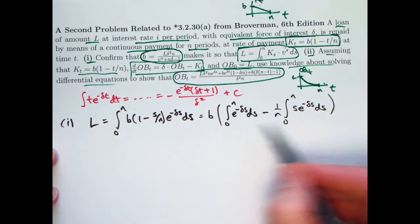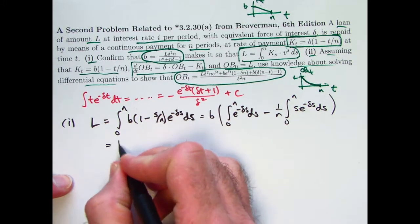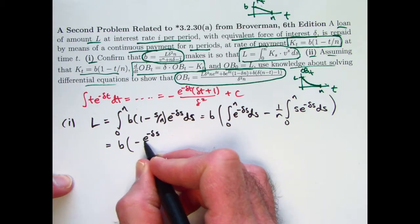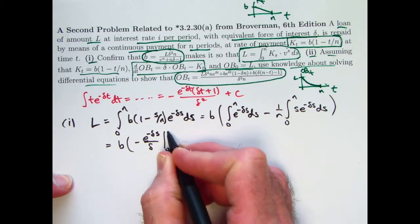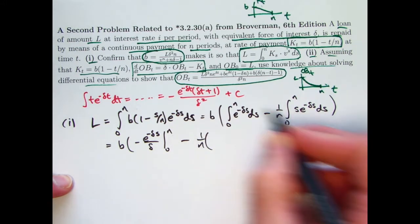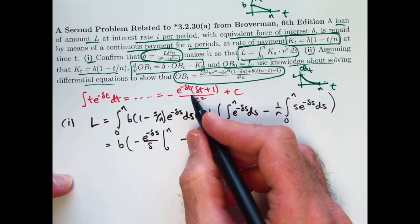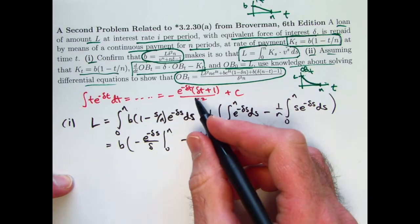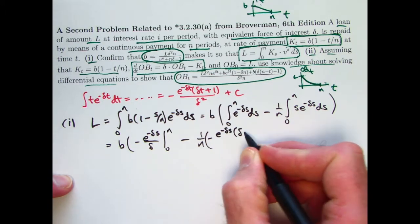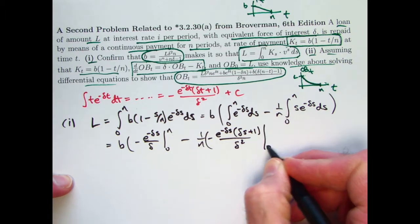I'm ultimately going to solve for b, so whatever this ends up being, I'm going to end up dividing both sides by that. So let's continue to keep the b out in the front. This integral here, I hope you can do fairly quickly in your head, is going to be this. This integral, the second integral, I need to use the formula in red here without bothering to put the c. So use this formula with, take the t to be s. I'm going to get negative e to the negative delta s times in parentheses delta s plus 1, all divided by delta squared. Evaluate from 0 to n.